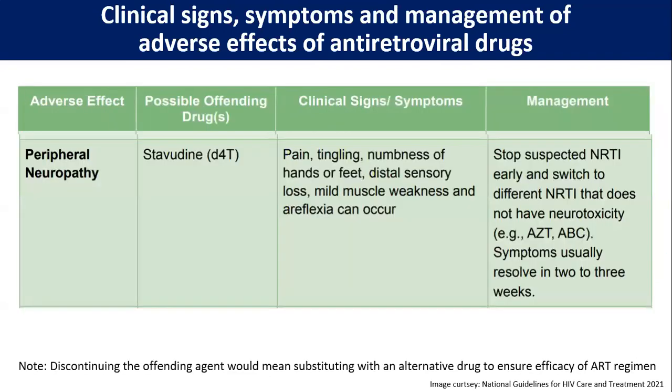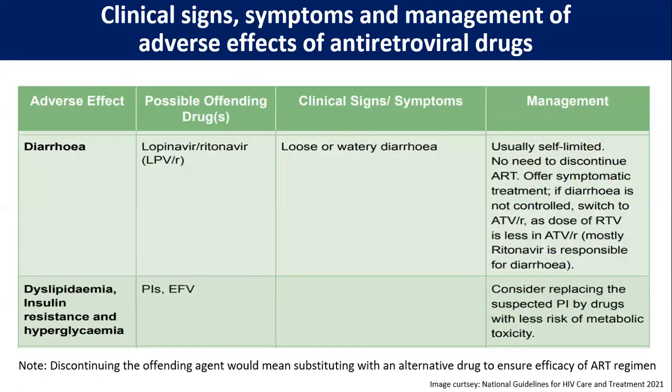Peripheral neuropathy is mostly associated with stavudine, which is no longer in the program. Diarrhea is possible with lopinavir/ritonavir — watery diarrhea, usually self-limiting, no need to stop ART. If the patient cannot tolerate, then shift to atazanavir/ritonavir. Dyslipidemia, insulin resistance, and hyperglycemia are possible with all PIs, and we should consider replacing the suspected PI with drugs with less risk of metabolic toxicity.